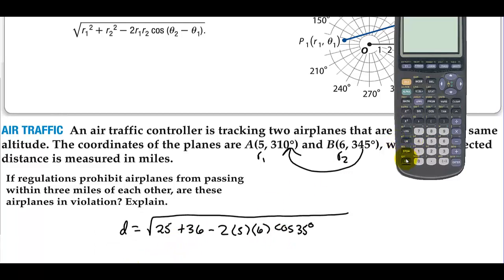Let's grab the calculator, and we're going to do 25 + 36 - 2(5)(6)cos(35). Make sure we're in degree mode, we are in degree mode. So I'll press enter, and then the square root of that answer, which is 3.443.